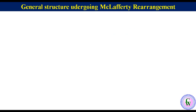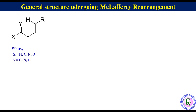Let's start with the specific structure that can undergo McLafferty rearrangement. The general structure of a compound capable of undergoing McLafferty rearrangement can be represented where X is hydrogen, carbon, nitrogen, or oxygen, and Y is carbon, nitrogen, or oxygen. X and Y can also be part of an aliphatic or aromatic ring.